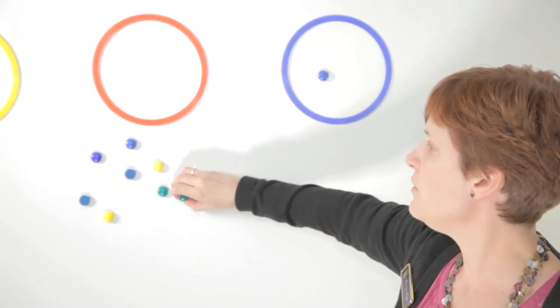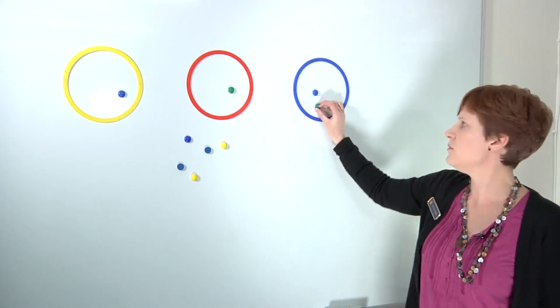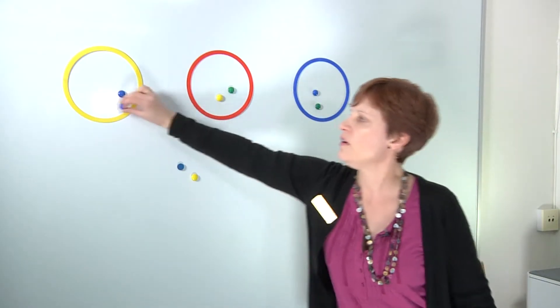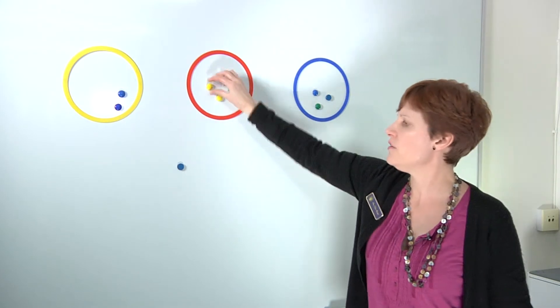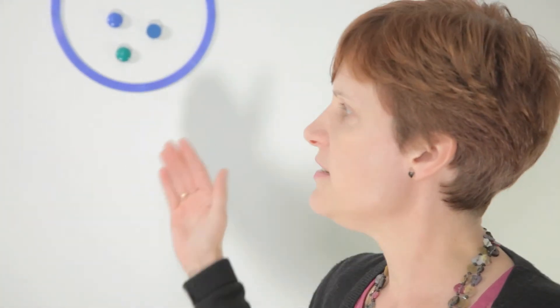One for you, one for you, one for you — and it has to be fair. Each of the plates has to have the same number of sweets.